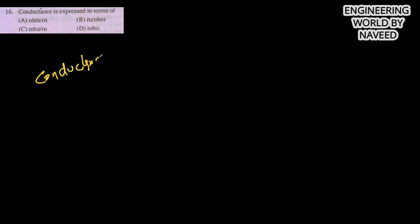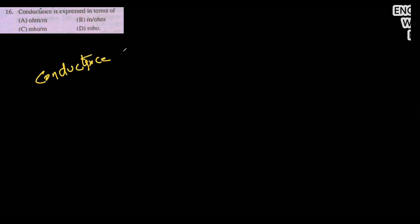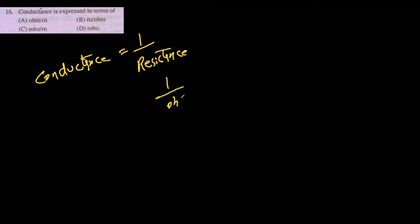Conductance is expressed in terms of — the conductance is the inverse of resistance, and the unit of resistance is ohm, so the unit of conductance is mho (1/ohm). Option D is the correct answer.